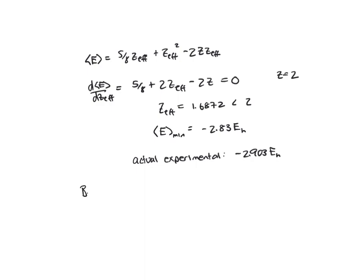An even better approximation would be allowing Z_effective for electron one to be different than Z_effective for electron two. If we assume that those two electrons affect each other slightly differently and use a different Z_effective for each, minimizing the energy with respect to two different parameters, we will get an even better approximation of the ground state energy.